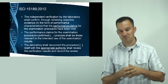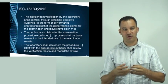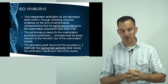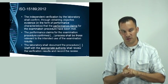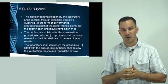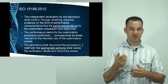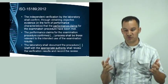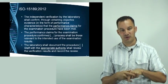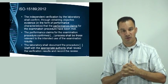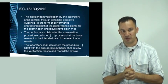Another part of ISO 15189 states that we should confirm using objective evidence — we have to perform experiments to demonstrate that the performance claims made by the manufacturer, such as a precision of 3%, are something we can also achieve in our own laboratory. Those experiments should relate to the intended use of the test.